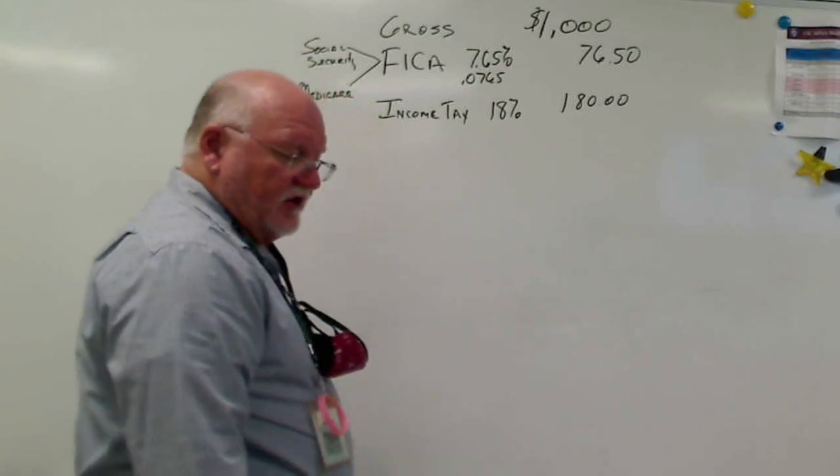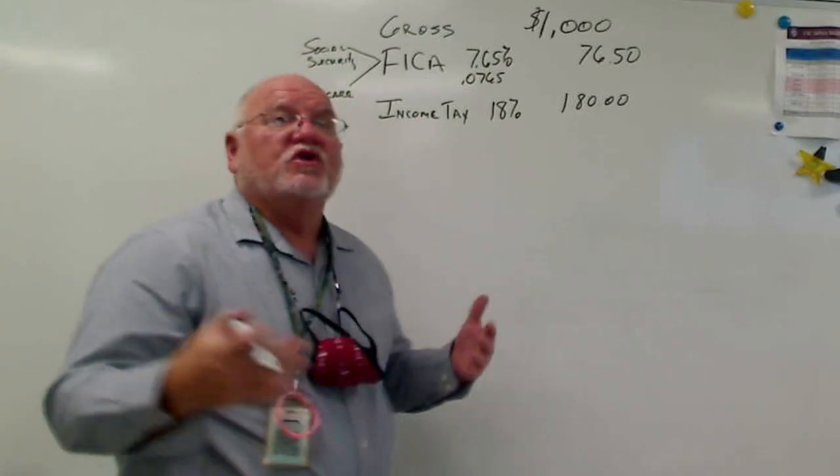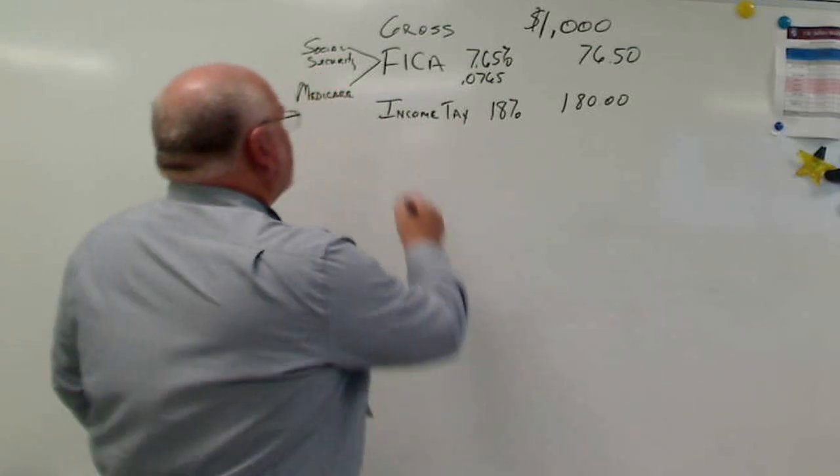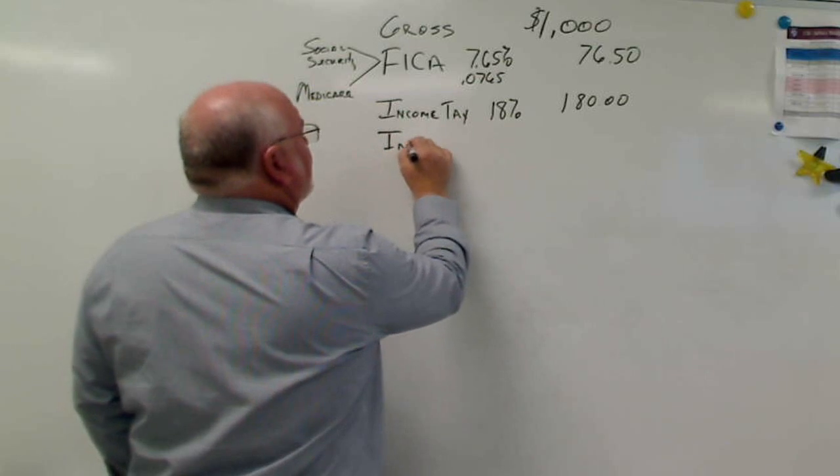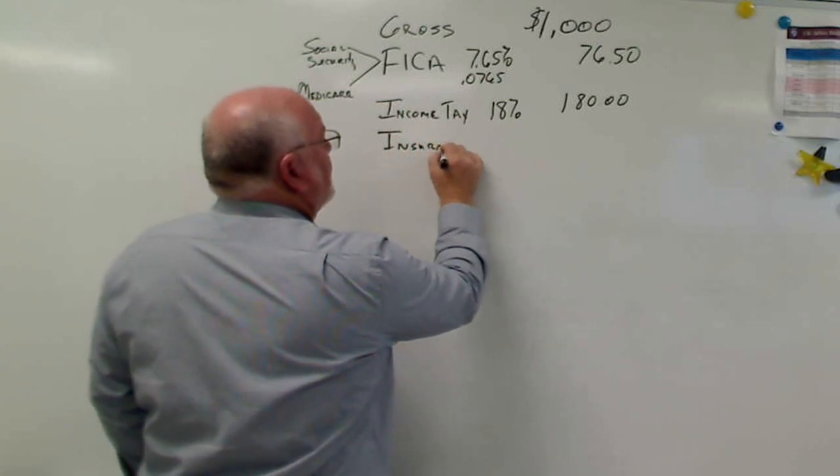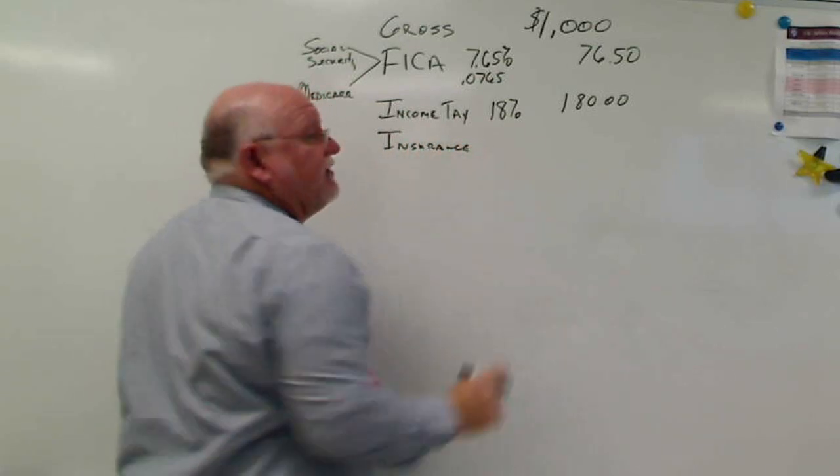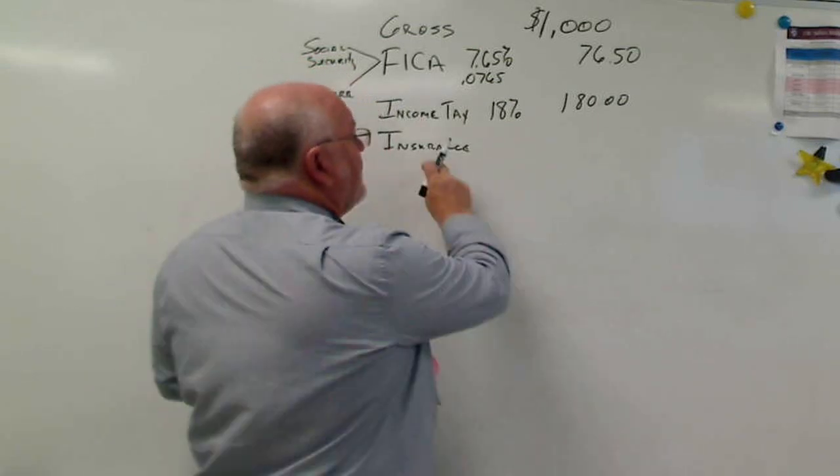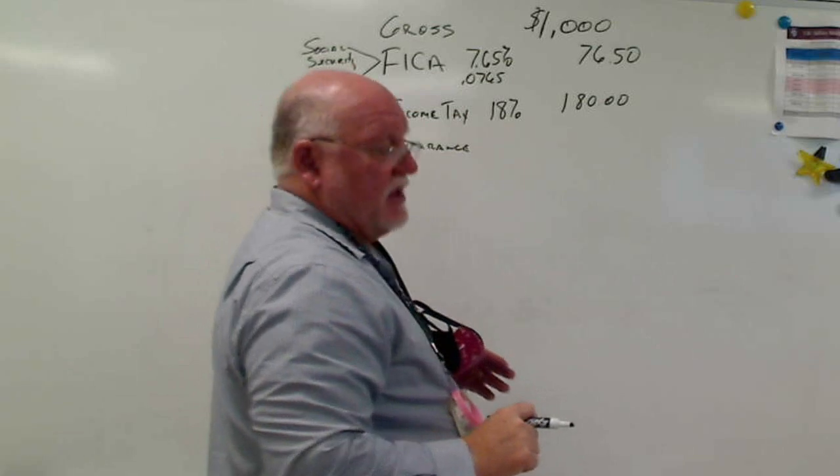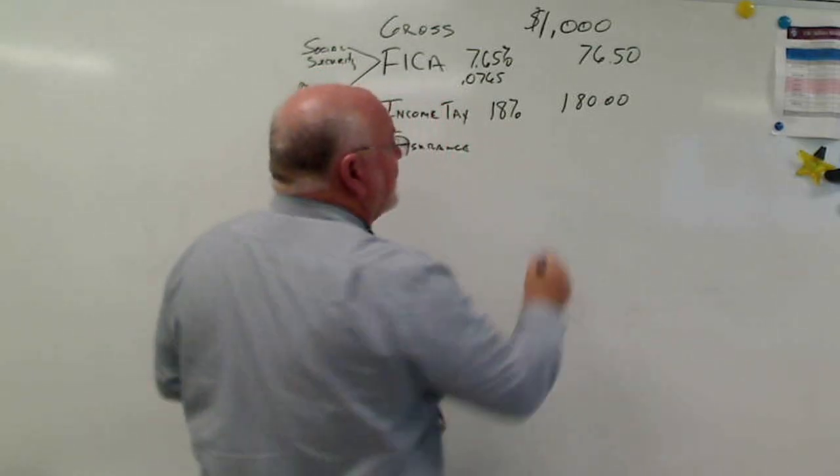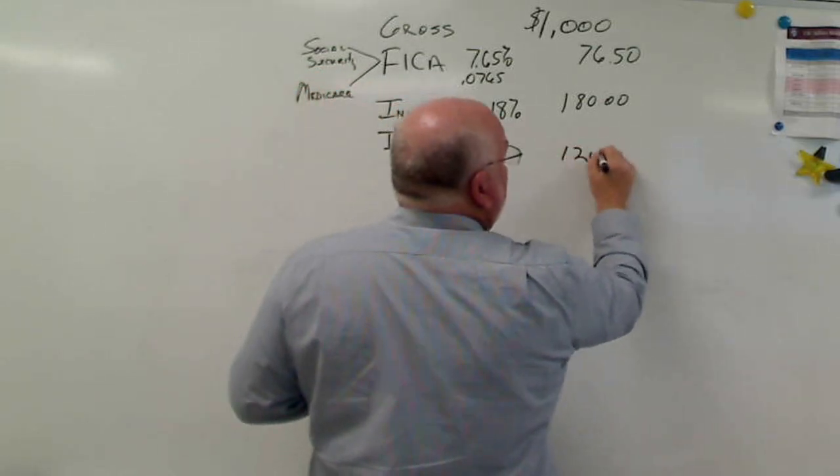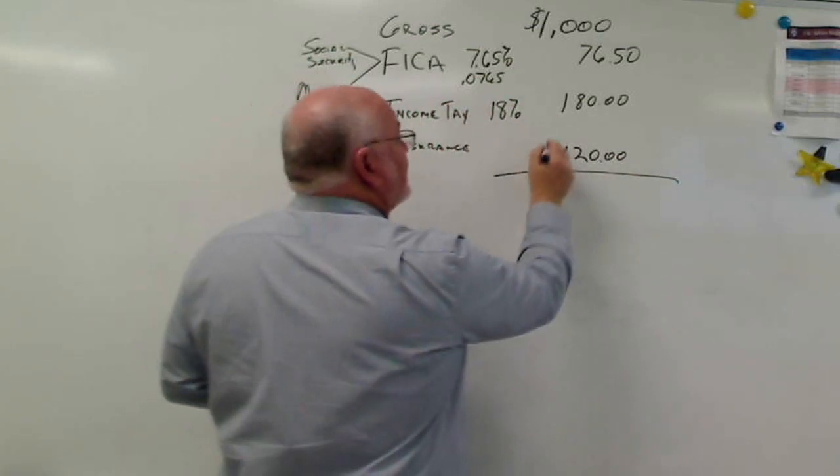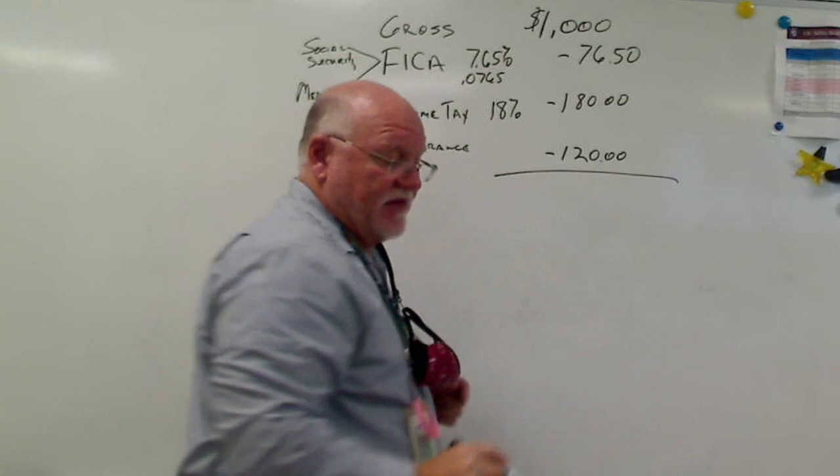Now let's also say that you buy the insurance through the company. If you did that, we've got insurance. Let's say it's for your family. For just an individual it's not quite as expensive. It depends on how much your company puts in. But here we are with insurance, and let's say that insurance is $120 a week. That means that your paycheck, all of these things are subtracted out of that $1,000.